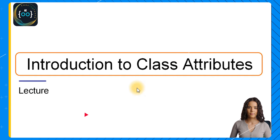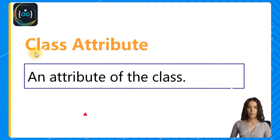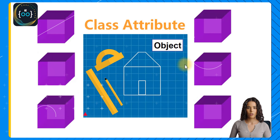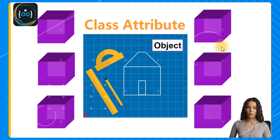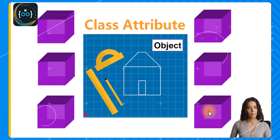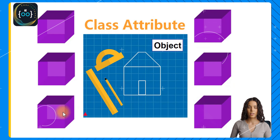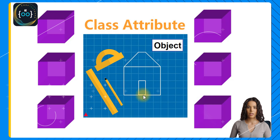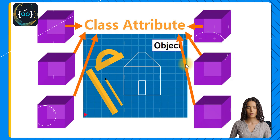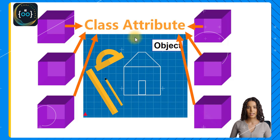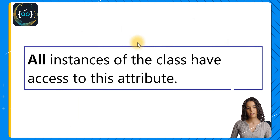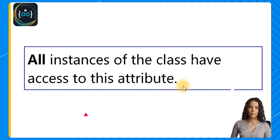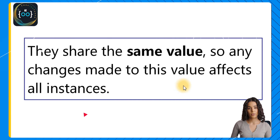Now that you know how to work with instance attributes, we will dive into class attributes. A class attribute is an attribute of the class — it belongs to the class, not to a particular instance. Previously, instance attributes belonged to the actual object we were creating, but class attributes belong to the class. So all instances share this attribute and take their value from the same source. All instances of the class have access to this attribute and share the same value.